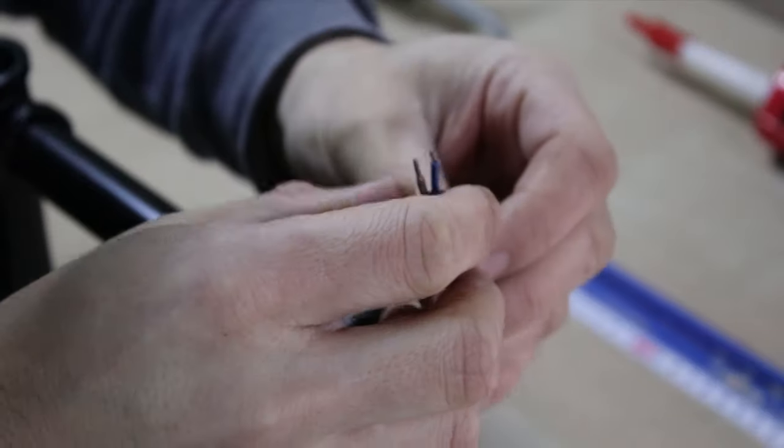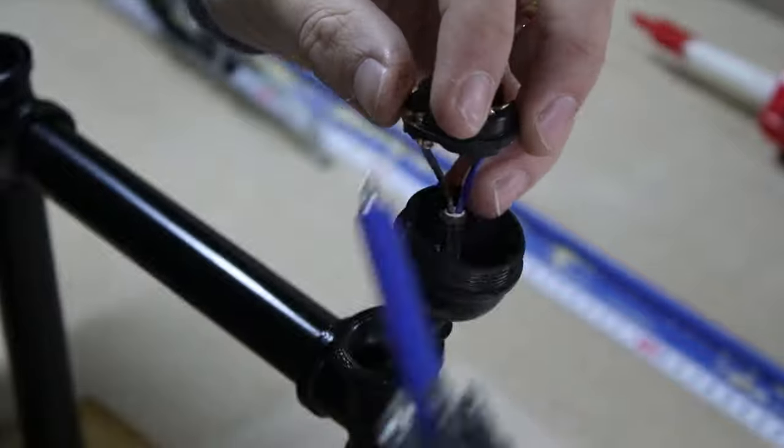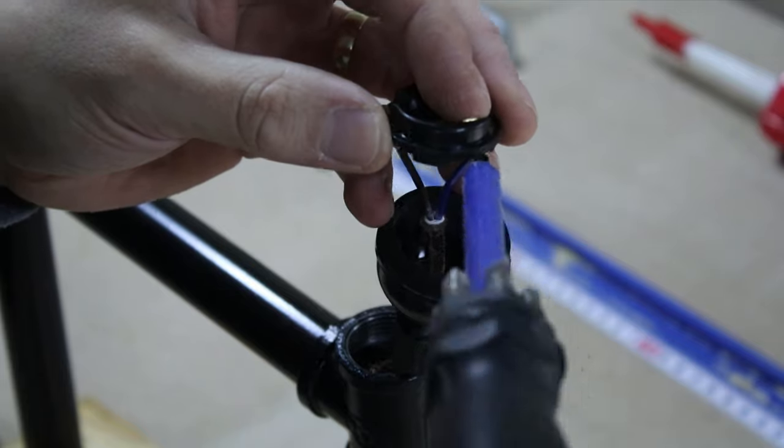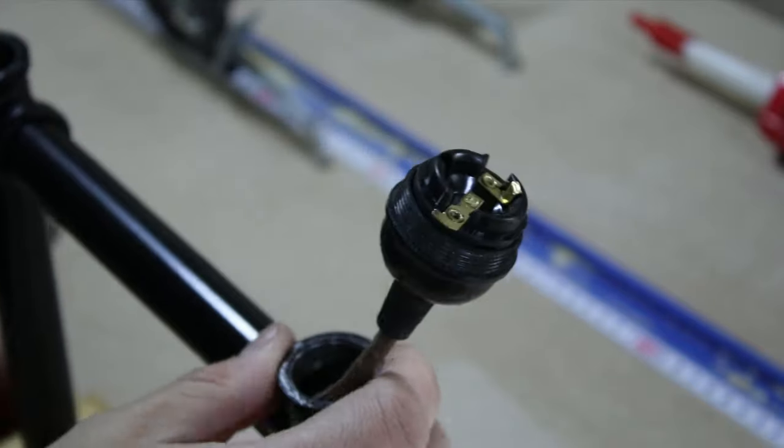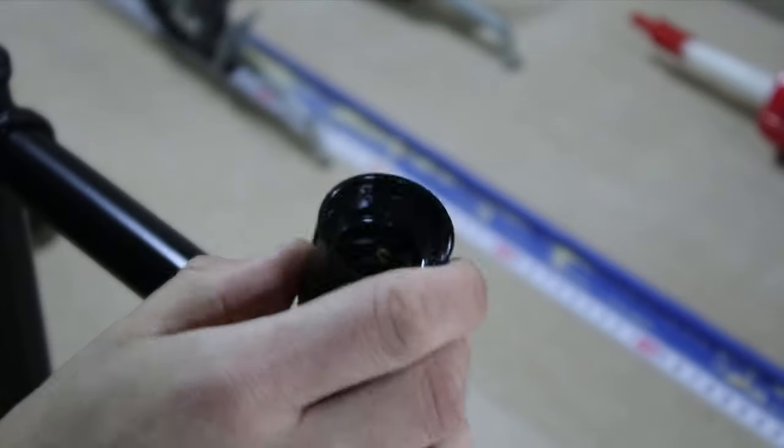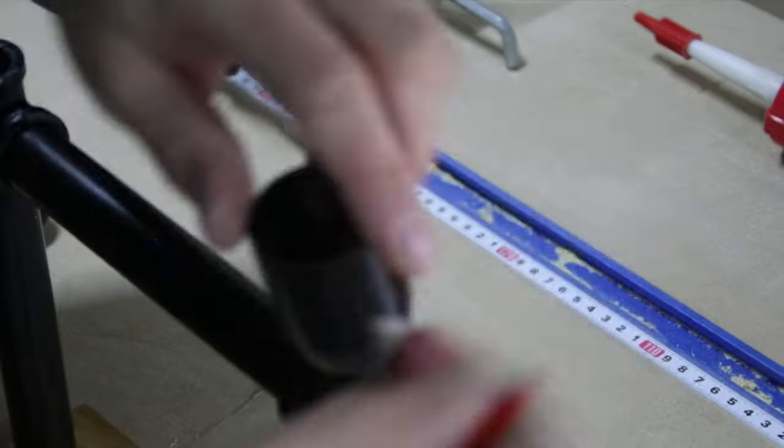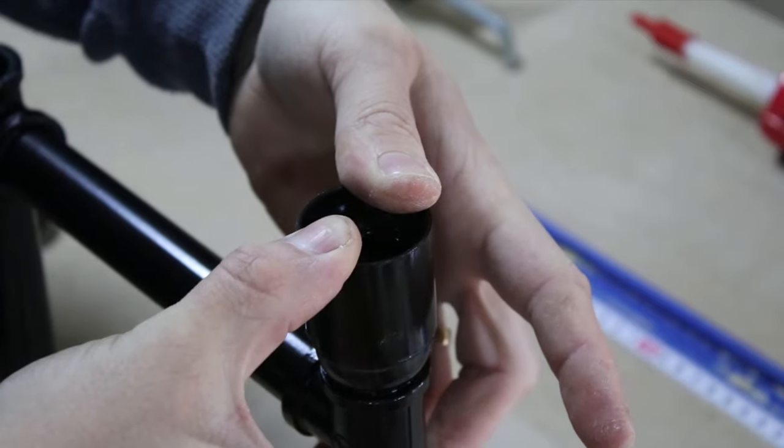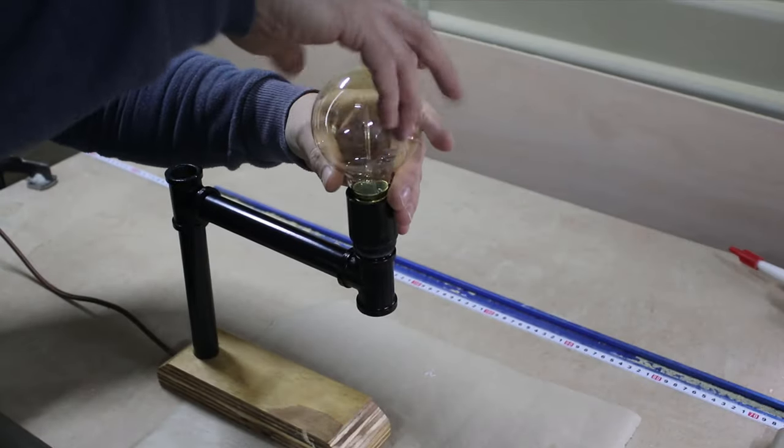Then I assembled the end of the light. When it was done I pulled the cable back so the light can sit on top of the pipe. Since the socket is made of plastic I used super glue for this connection. After a couple of minutes I was able to test the lamp.